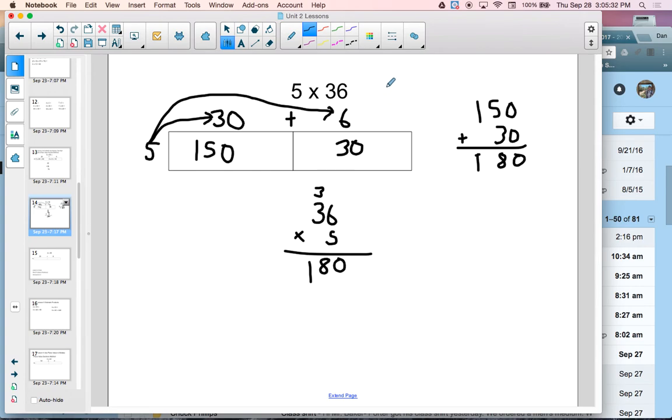So that is how you use place value sections to model two-digit by one-digit multiplication.